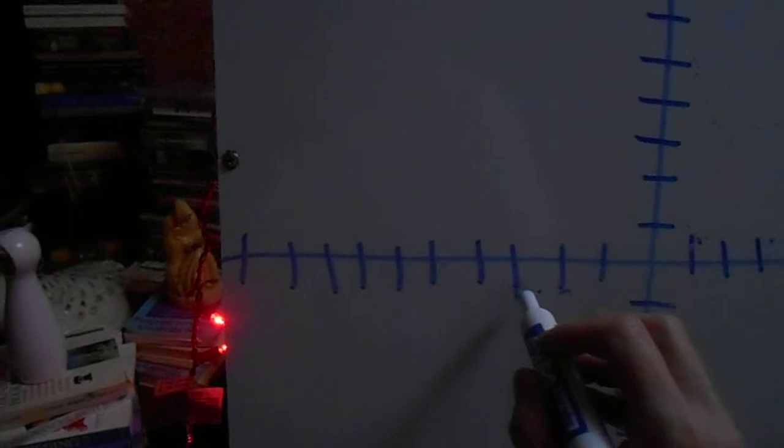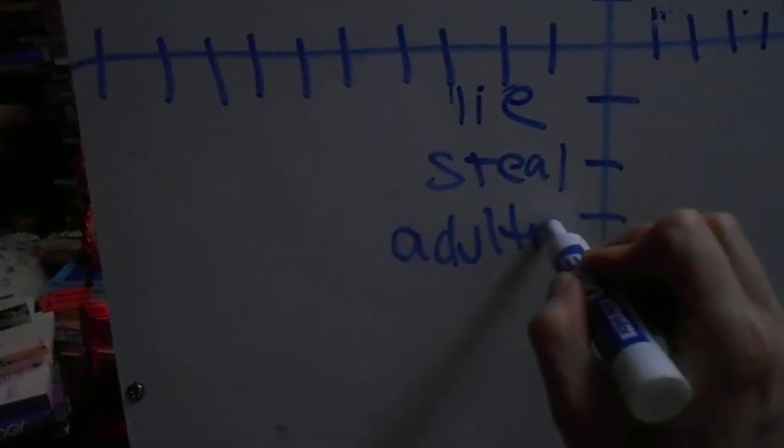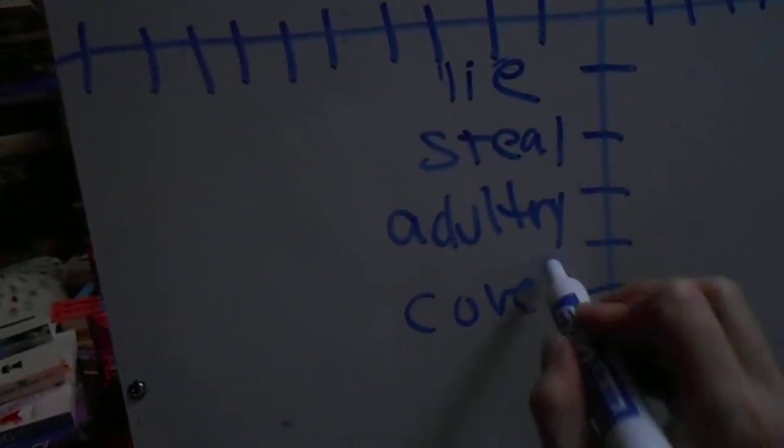He gave most of us the rules in a negative, negative way: do not lie, do not steal, do not commit adultery, don't covet, don't make any idols, don't take my name in vain.